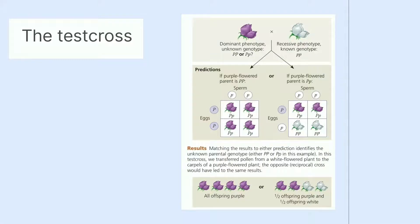Untuk mengetahui genotip individu dengan fenotip dominan, orang tersebut bisa menjadi homozigot dominan atau heterozigot. Jawabannya adalah dengan melakukan tes cross, mengawinkan individu misterius dengan individu resesif yang homozigot. Jika ada keturunan yang menampilkan fenotip resesif, orang tua misterius harus heterozigot.